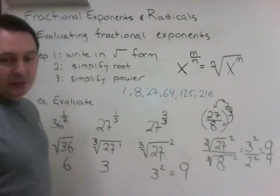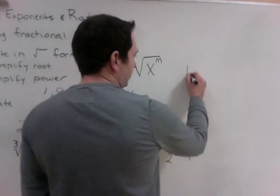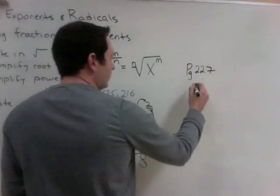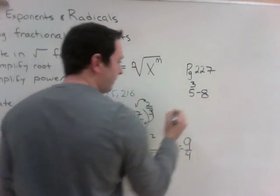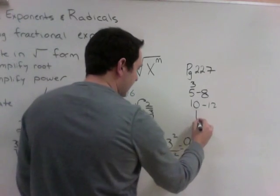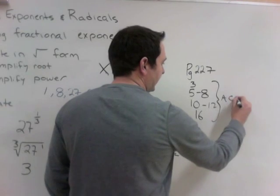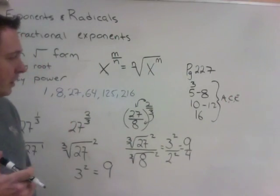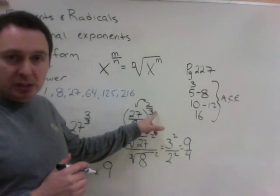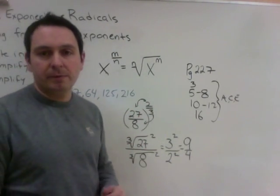For today's assignment, the questions are on page 227: question 3, questions 5 to 8, 10 to 12, and 16. Do only parts A, C, and E for each. Note: question 16 will give you decimals instead of fractions — change your decimal into a fraction first, then do your boots and hats, and then solve.